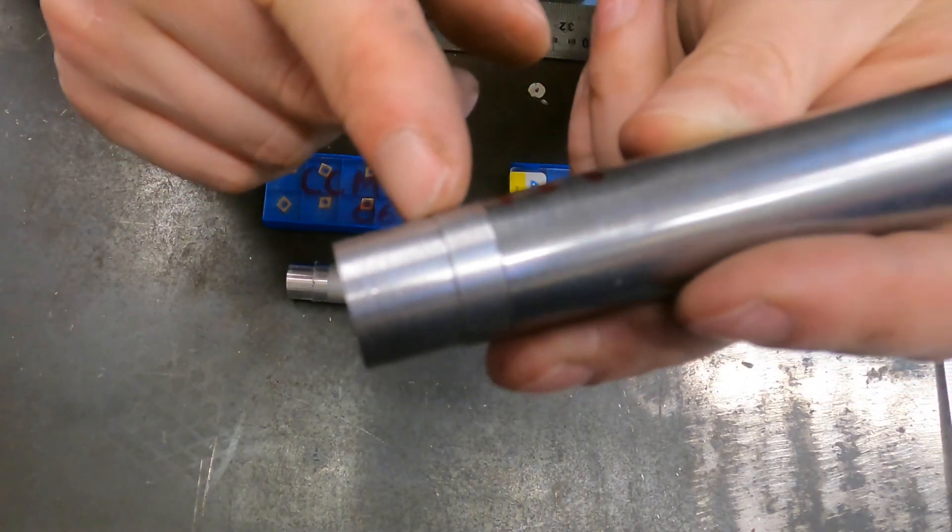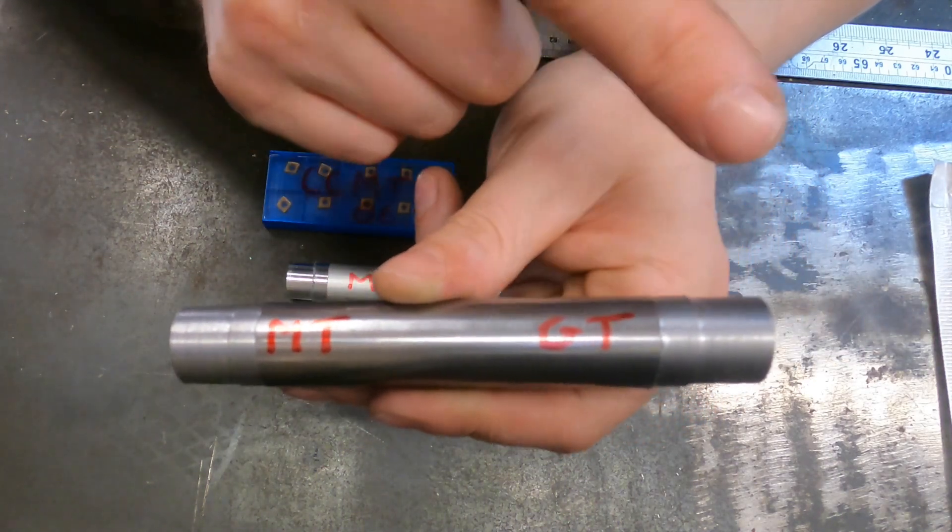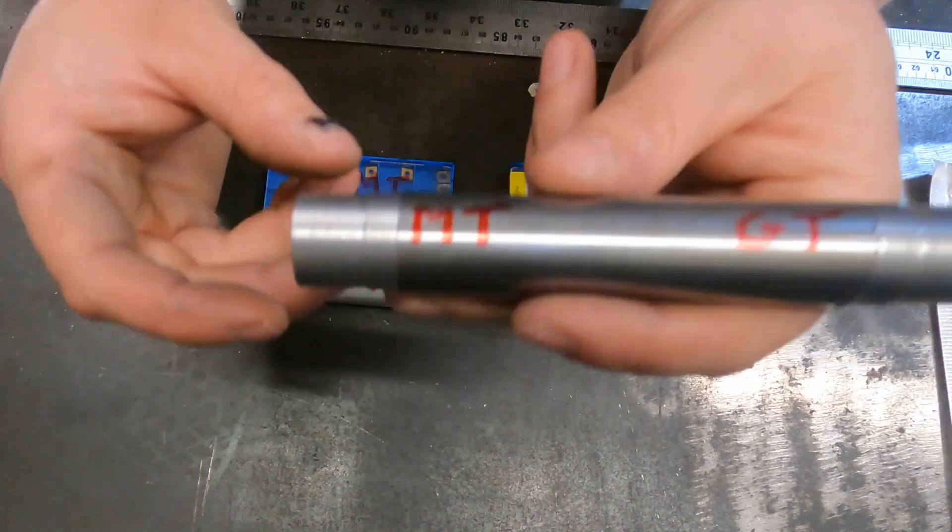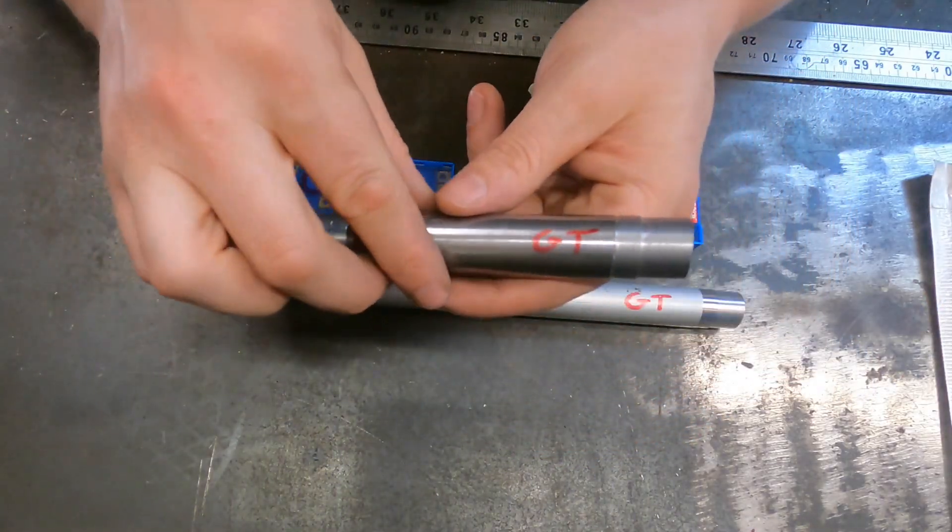Looking at it, looks like the MT has actually picked up a little bit of chatter on there. I don't know if the camera lens can pick that up but I would definitely be using the GT when using mild steel.